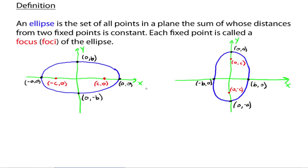Each ellipse has a major axis and a minor axis. The major axis is the longer one. For the horizontal ellipse on the left, the major axis goes from negative A, 0 to A, 0. The minor axis goes from 0, B to 0, negative B — this little spot right here.